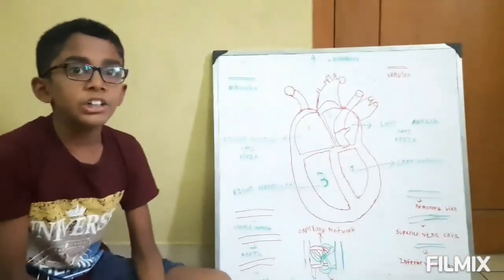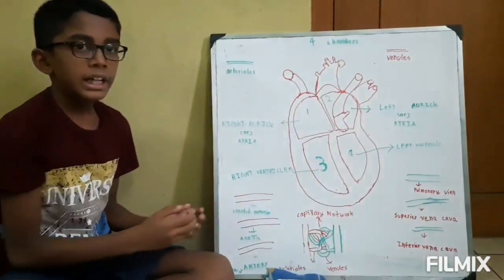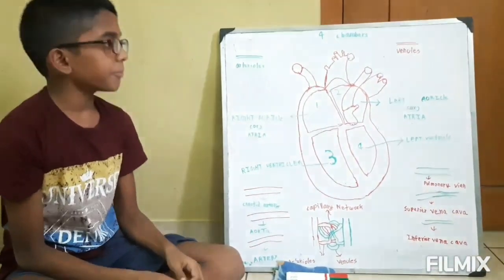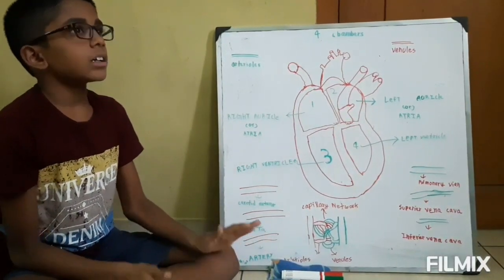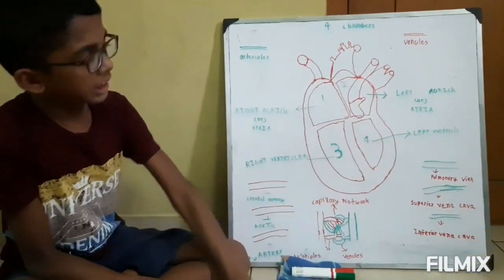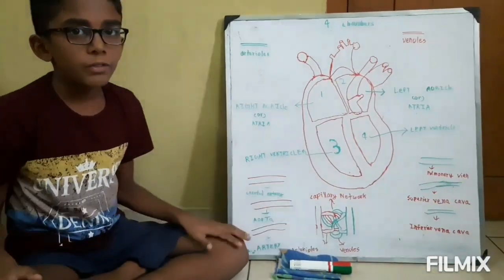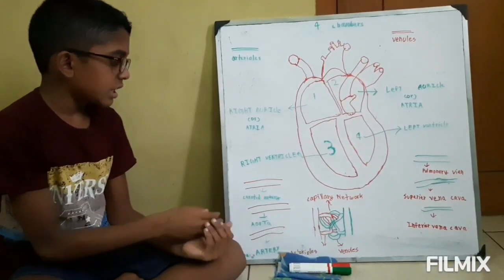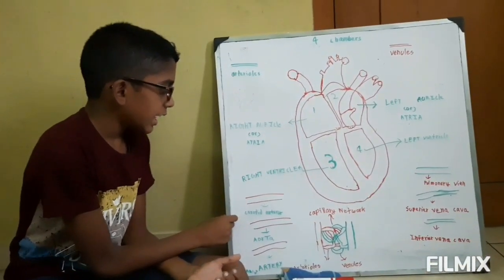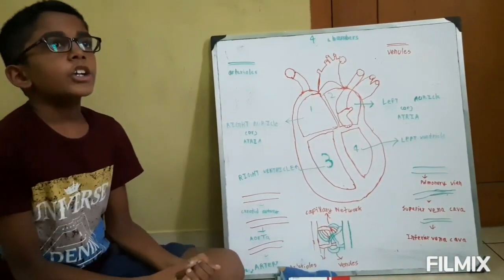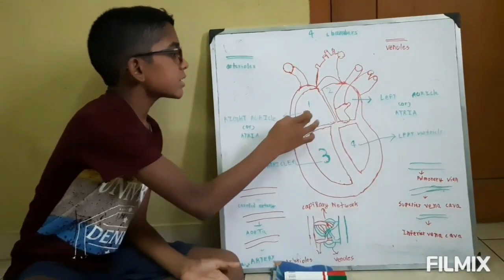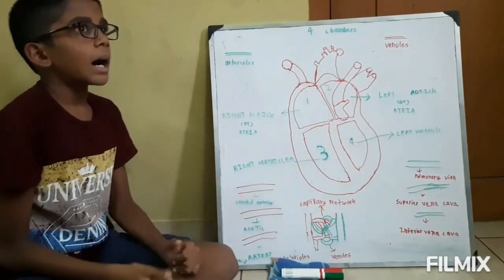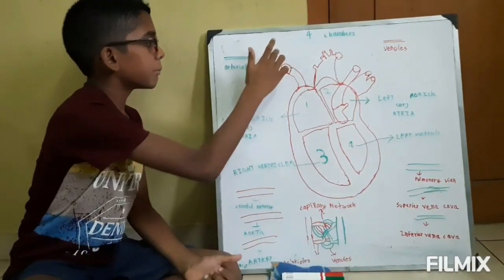Now let's see about arteries. There are three types of arteries. An artery's job is to take the pure blood from the human heart and give it to all parts of the human body. The first one is called Carotid Artery. The Carotid Artery takes pure blood from the human heart to the upper portion of the human body.